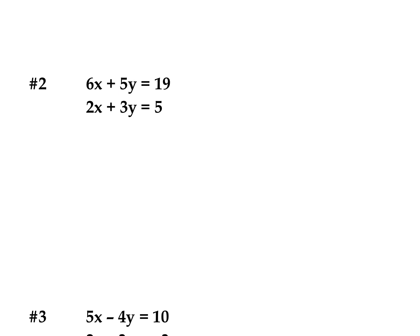Here's another system of equations we can solve by elimination after multiplying one of the two equations. Neither of these coefficients is going to cancel out by just adding or subtracting the way they're written. So I can look and figure out what I could multiply one equation by to get the coefficients to be the same in front of one variable. I can see this 2, if I multiply it by 3, will become a 6. So I can multiply everything by 3 — or what I'm going to do is multiply by negative 3, so I'll have a negative 6 and can add them to cancel out. My first equation stays the same: 6x plus 5y equals 19.